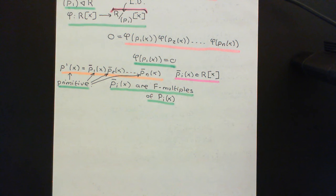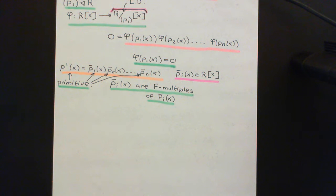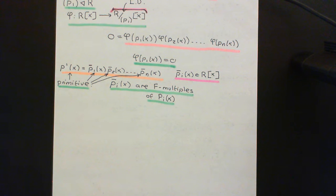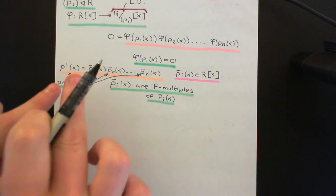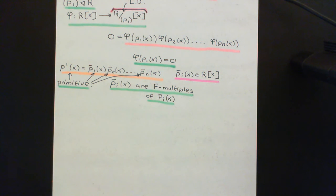Now, the corollary of Gauss's lemma tells us when we can say that a certain polynomial is irreducible if it's primitive. The corollary says that if you have a polynomial p(x) in a ring of polynomials over a unique factorisation domain, then it's going to be irreducible if and only if it's irreducible in the ring of polynomials over the fraction field. So now what we need to do is take these primitive polynomials — we know they are primitive polynomials now — and ask: are they irreducible in the ring of polynomials over the fraction field? If the answer is yes, then we can instantly conclude that they are irreducible in the ring of polynomials over the unique factorisation domain.